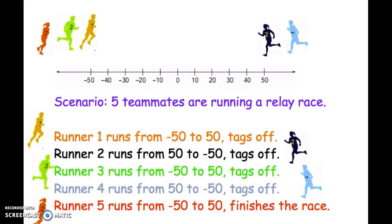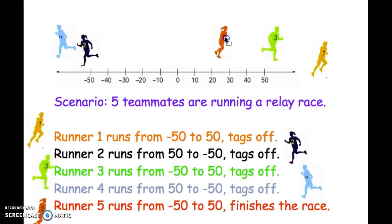I want you to think about this scenario. There's five teammates running a relay race. Runner one starts at negative 50 and he runs to 50, and he tags runner two. Runner two runs from 50 to negative 50, and then she tags runner three, who then goes back to 50 and tags four. Again, he runs left to negative 50, tags five, and she goes from negative 50 to 50 and finishes the race.